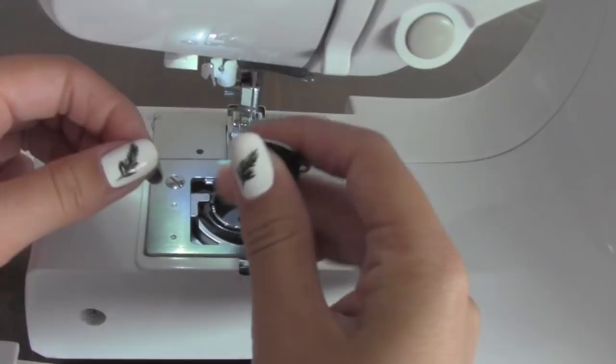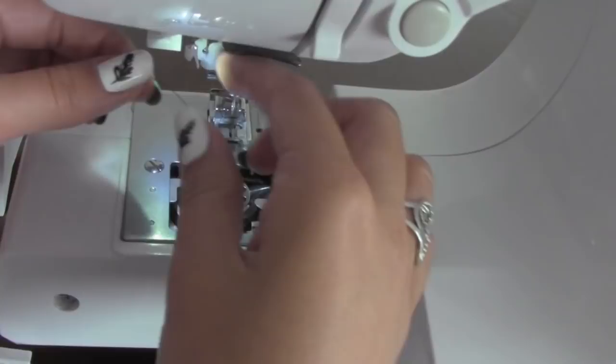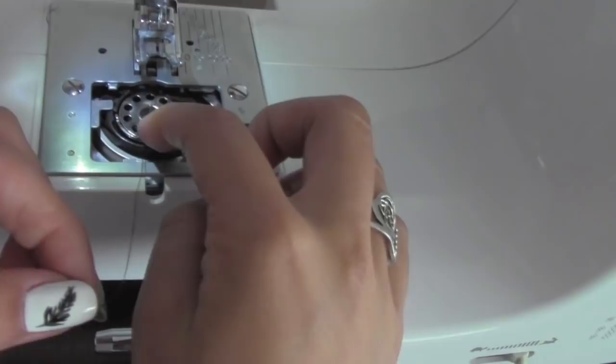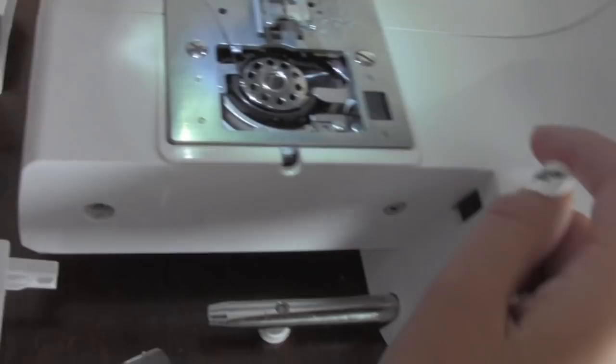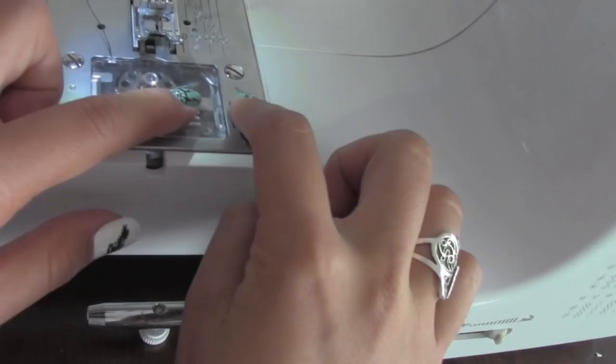So you're just going to place the bobbin right inside. The thread sticks out like so. And pull it through this little slit. Hold it down. Make sure it's under. And pull it out. The thread should be right there. And out. Out and about. Place the bobbin cover back. Thread should be coming out of here.